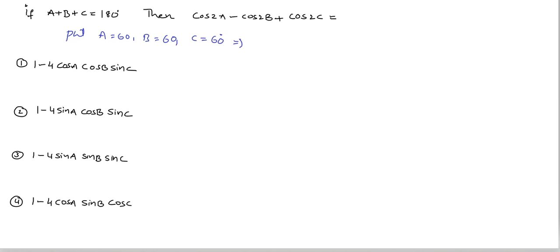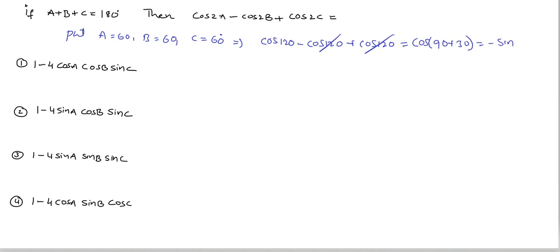Substituting in this problem: cos 2a is cos 120, minus cos 120, plus cos 120. The first two cos 120 terms cancel, leaving cos 120. Cos 120 equals cos(90+30), which is in the second quadrant, equal to minus sin 30, that is minus 1 by 2. So the given problem value is minus 1 by 2.